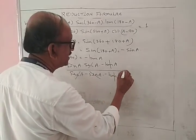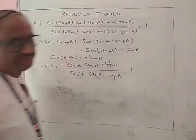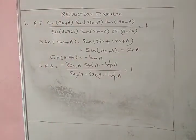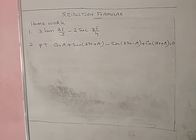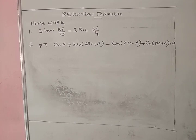Next, two homework problems. First: evaluate 3 tan(2π/3) minus 2 sec(3π/4). Note: 2π/3 is 120° and 3π/4 means π/4 is 45°, so 3π/4 is 135°. Second problem: prove that cos A + sin(270 + A) minus sin(270 - A) + cos(180 + A) is equal to 0.